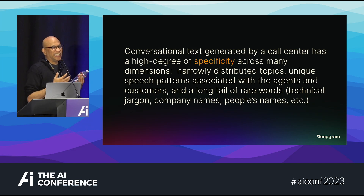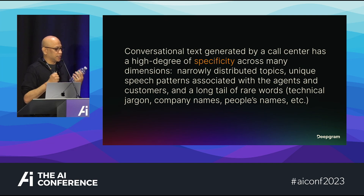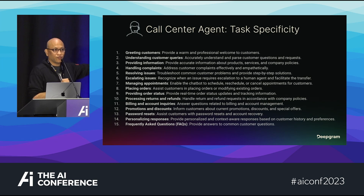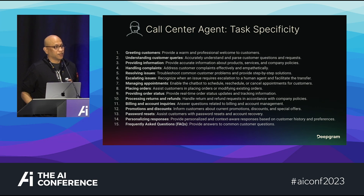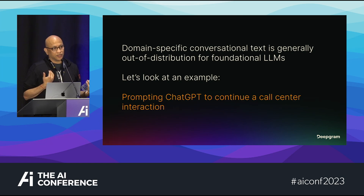There is a high degree of specificity when you talk about these domain models. In the call center use case, there are narrow distributed topics that people are focused on, very narrow speech patterns that agents use, and a long tail of rare words. Here is an illustration of the task specificity — there are 15 tasks — and this is what a call agent does on a day-to-day basis.